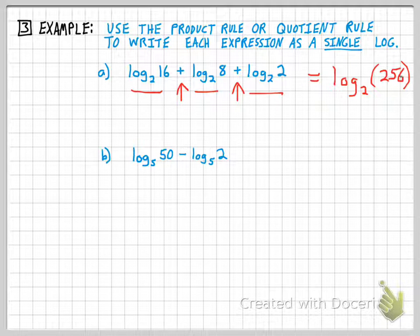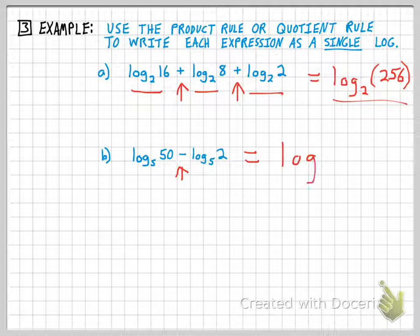So you could plug in your calculator or think about that a little bit. But that would be the single logarithm that's the equivalent to the sum of the individual logs. Down here at the bottom, I have another one. And this one involves a subtraction sign. And so when I write my single logarithm, I'm going to take the first value, which is 50, and divide it by the second value, which is 2. And my base is 5.